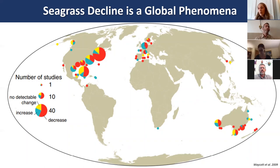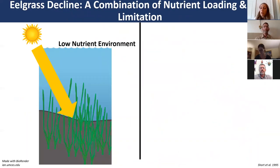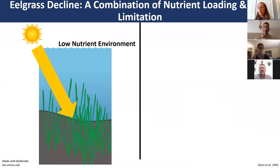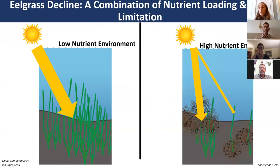Seagrass decline—or more specifically eelgrass decline—is thought to be due to a combination of nutrient loading and light limitation. In a low-nutrient environment, eelgrass receives sufficient sunlight to grow, thrive, and spread. But when excess nutrients are added, eelgrass competitors like phytoplankton and macroalgae outcompete and grow over the eelgrass, essentially shading it out and preventing it from receiving sufficient sunlight to grow.